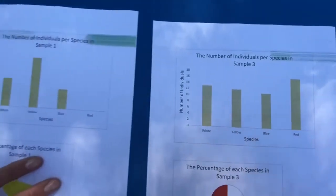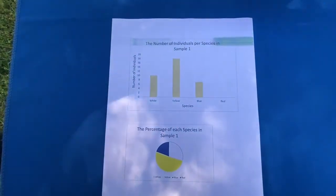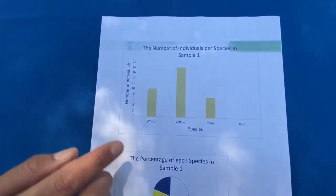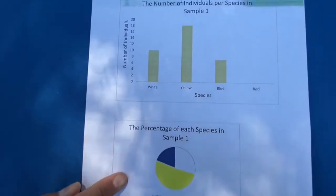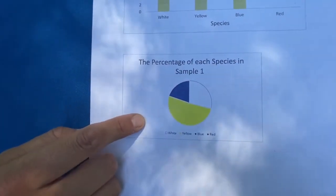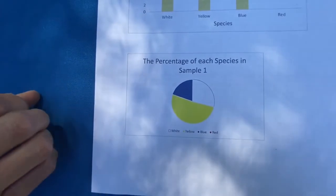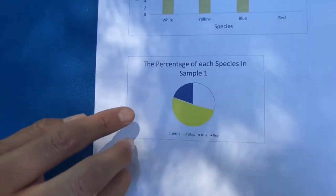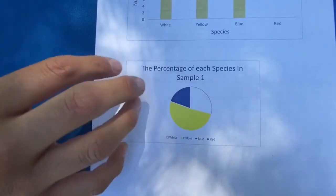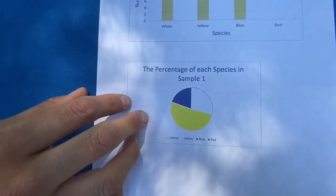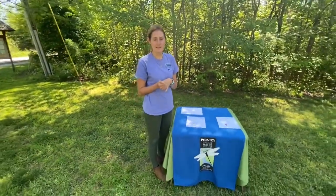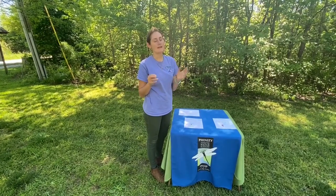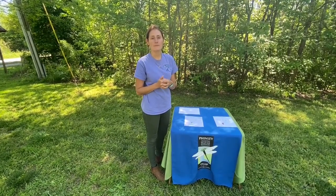Whereas here in sample 1, or community 1, you can see that we're missing one — we're missing the red species. You don't see it in the pie chart either. So here we have what we call less diversity. If a species is missing and there's less diversity within a community, we can often know that that community comes from a lower quality habitat.